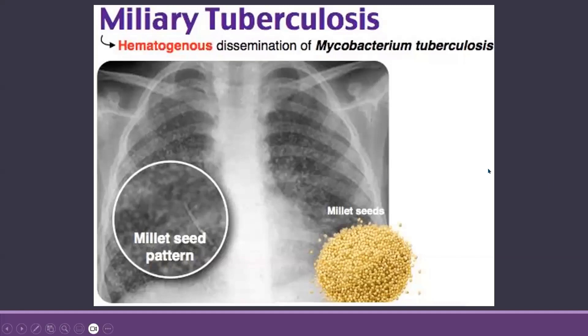Why are they called miliary nodules? Because they resemble millet seeds. They are very small — about three millimeters in size — and they are usually distributed throughout the lung fields.